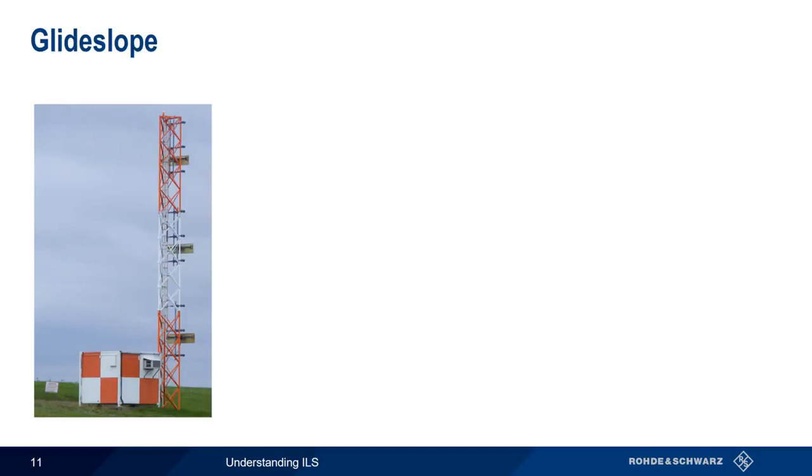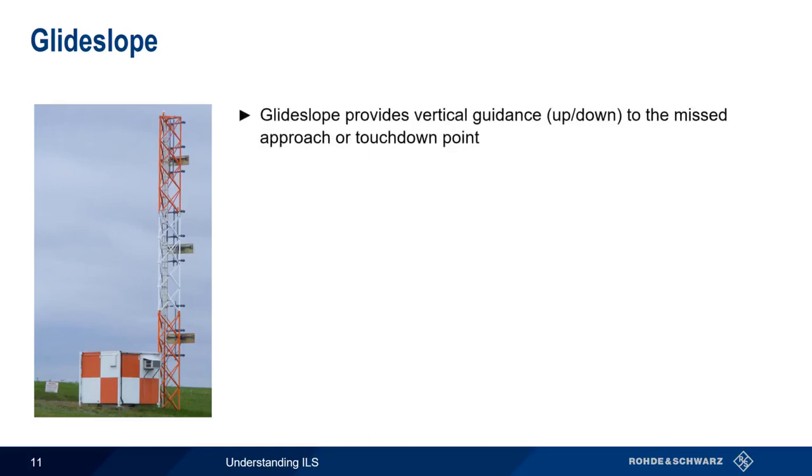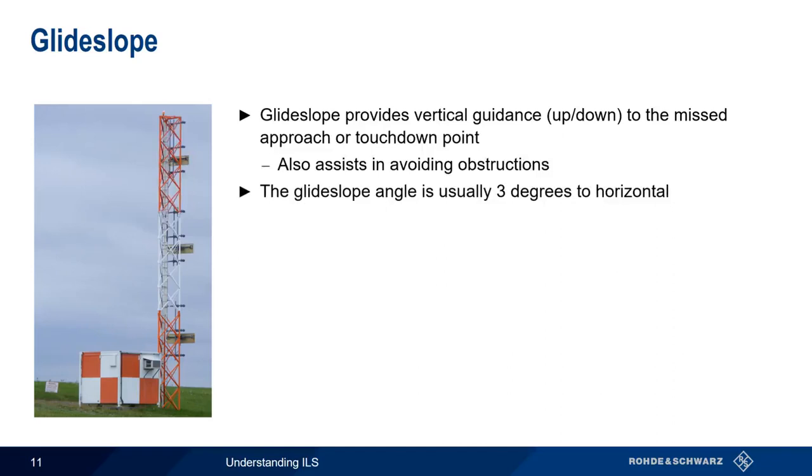Now, let's look at glide slope. Whereas the localizer signal provided horizontal guidance, the glide slope signal provides vertical, or up-down guidance, to either the touchdown point or the missed approach point. The glide slope signal is also useful in helping to avoid obstructions, such as trees or other tall objects near the runway. Generally speaking, the angle of the glide slope is 3 degrees down from horizontal, although this may vary somewhat.